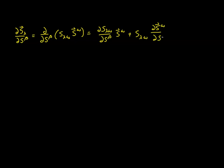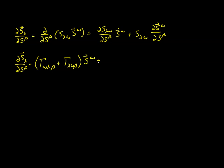This gives us the partial derivative of S_lambda with respect to S_beta. From previous videos we know that the partial derivative of the covariant metric tensor in parentheses is simply gamma_{omega lambda beta} plus gamma_{lambda omega beta}. We also have the remaining factor S_{lambda omega} times the partial of S^omega with respect to S_beta.